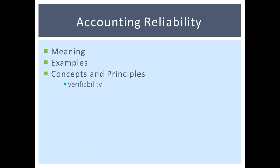Verifiability means information is verifiable when multiple independent measures are used to come up with the same results. In other words, auditors and other third parties can measure and evaluate a company's financial statement accounts and end up with the same result. If auditors cannot verify financial information, they cannot issue an unqualified opinion.